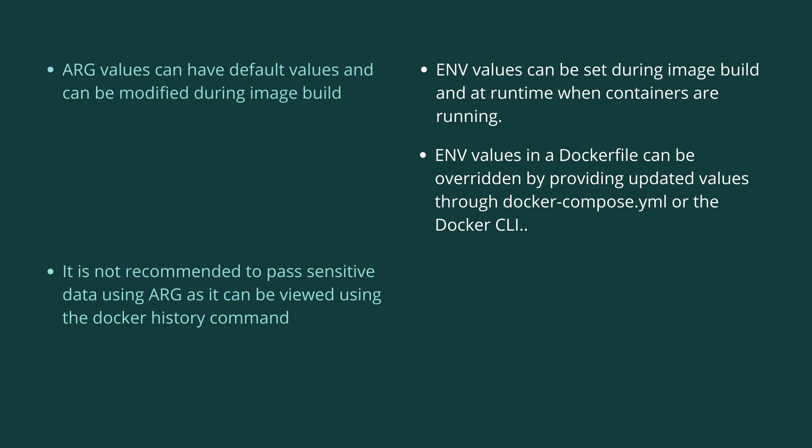ENV values in a Dockerfile can be overridden by providing updated values to a docker-compose YAML file or through the Docker CLI. Note that it is not recommended to pass sensitive data using ARG, as it can be viewed using the docker history command.